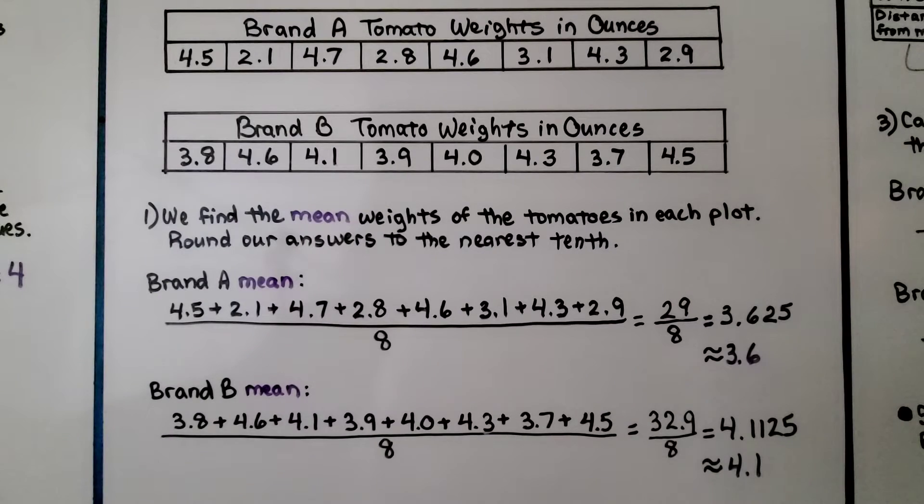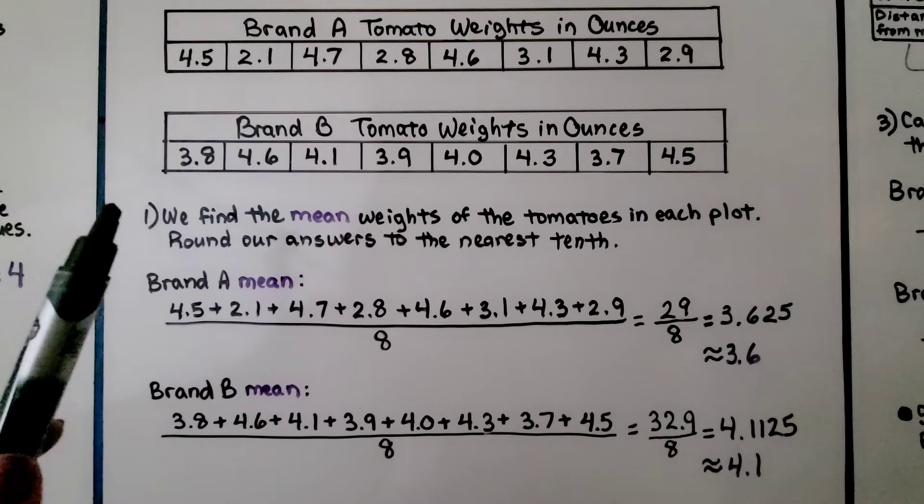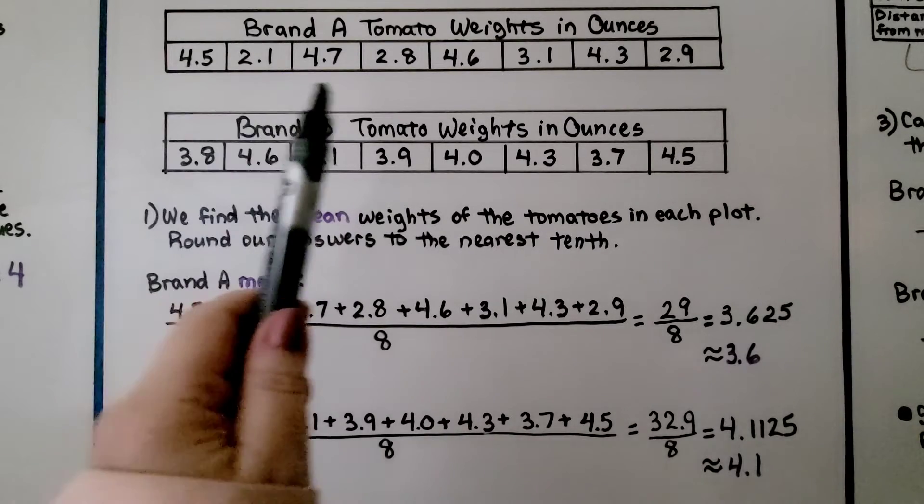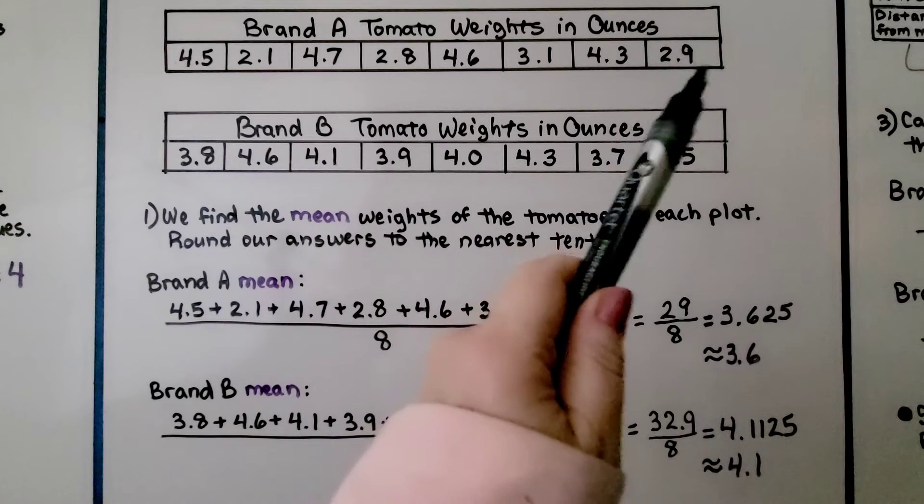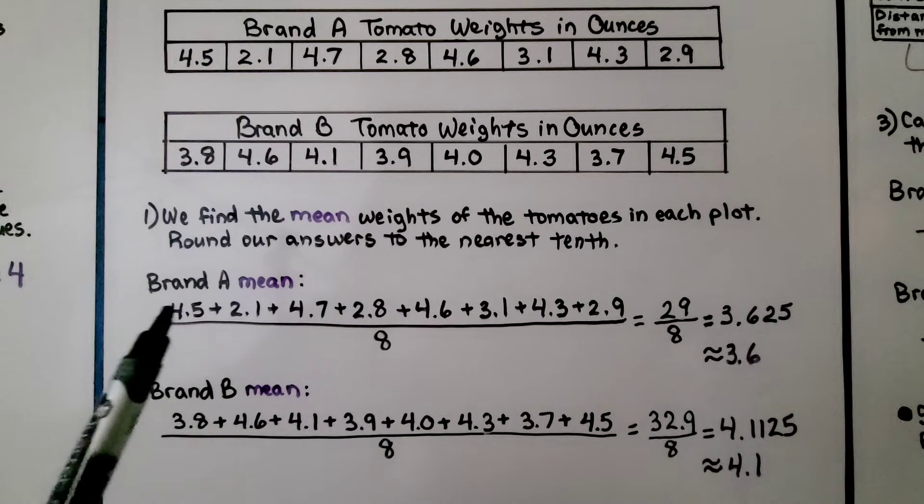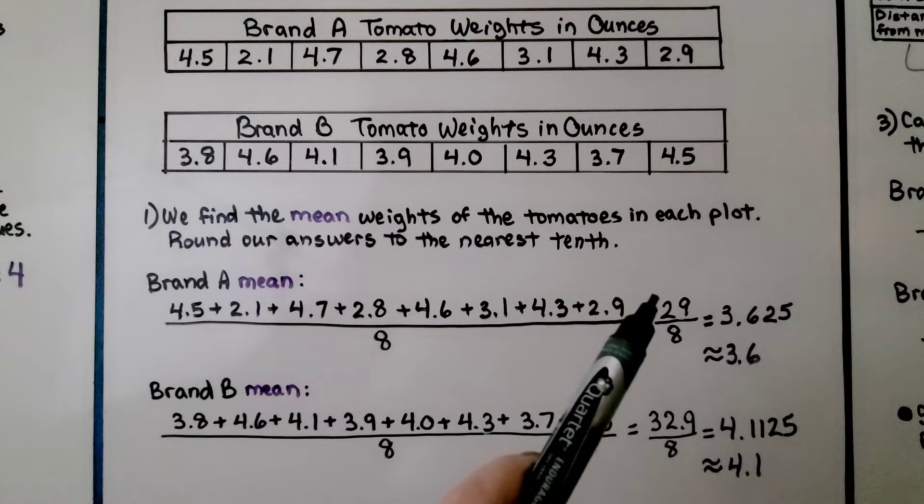So the first thing we do, using his recorded data, we find the mean weights of the tomatoes in each plot. We're going to add all of these data values and get an average, a mean. Then we're going to add all of these data values and get an average or mean. So we write all of the values as addends.